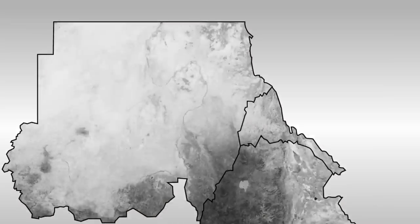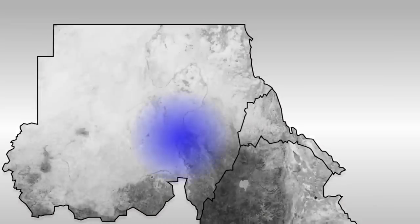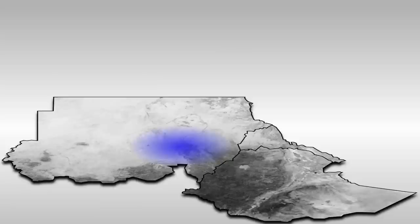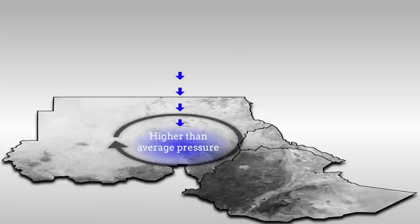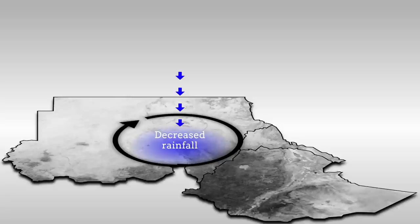In the season when crops are watered, the Jazeera region becomes notably cooler than the surrounding area, producing a region of anomalous sinking air, higher-than-average air pressure, and sustained clockwise air circulation, which are associated with decreased rainfall over the irrigated zone.